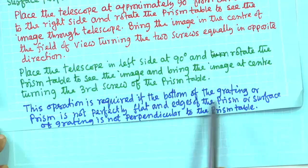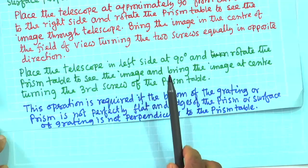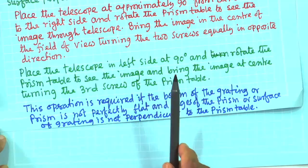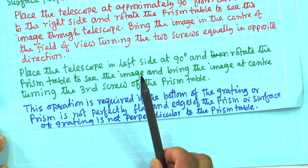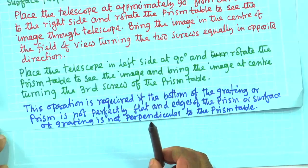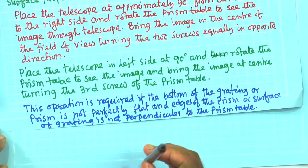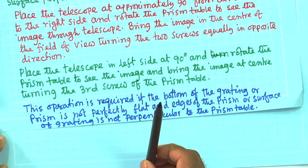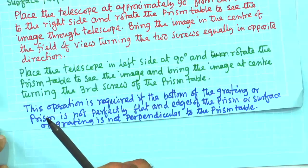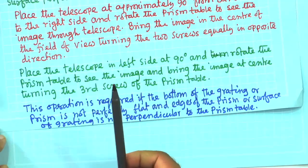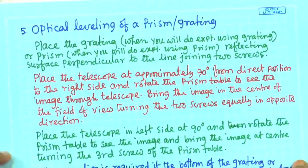This operation is required if the bottom of the grating or prism is not perfectly flat, or the edge of the prism or grating surface is not perpendicular to the prism table. In reality, this does happen, so optical leveling is necessary to ensure the prism or grating is properly oriented for the experiment.